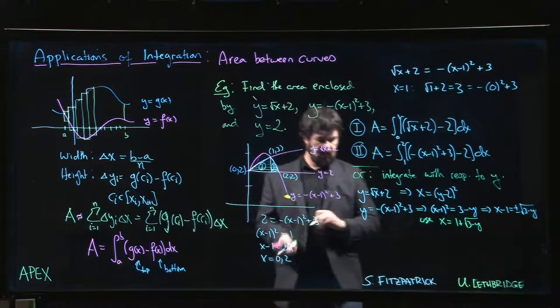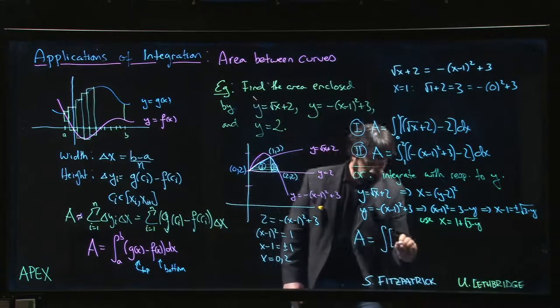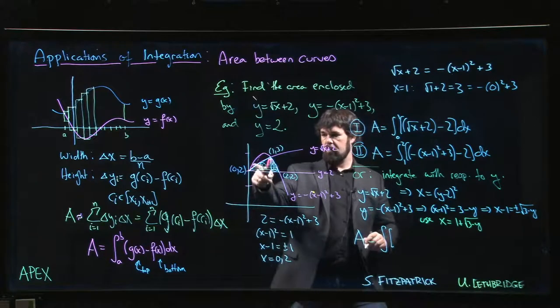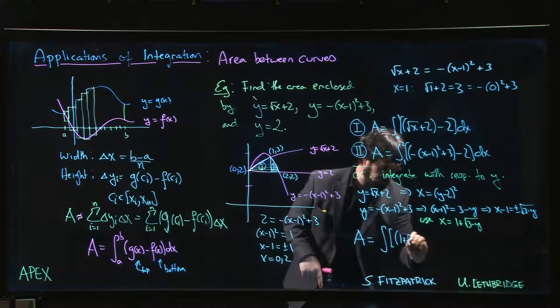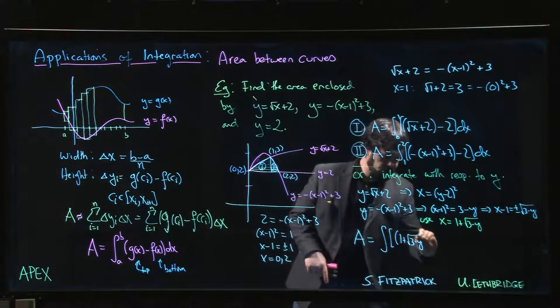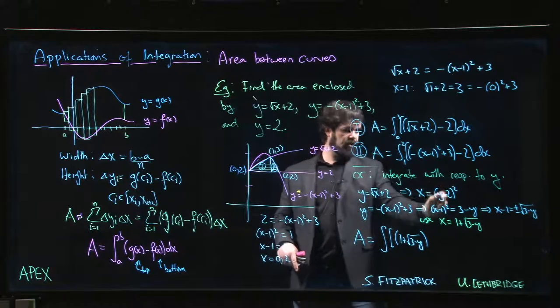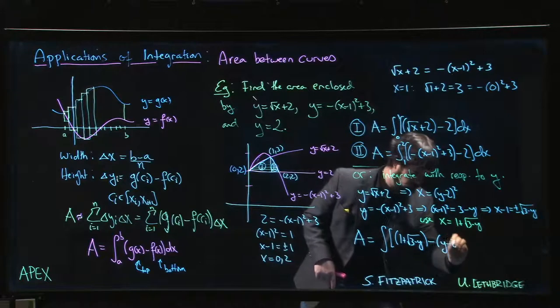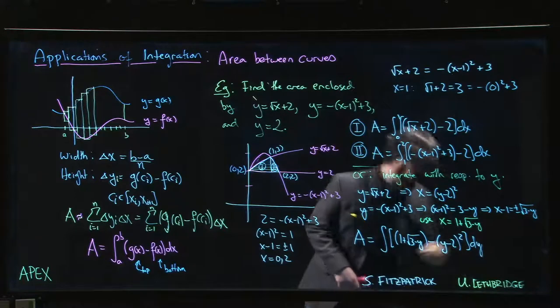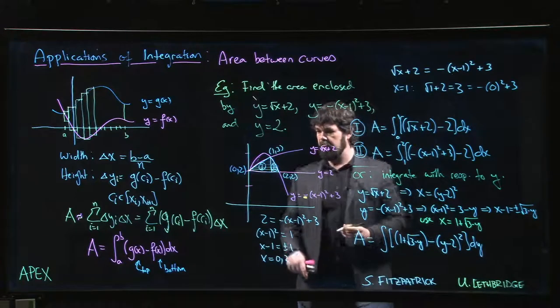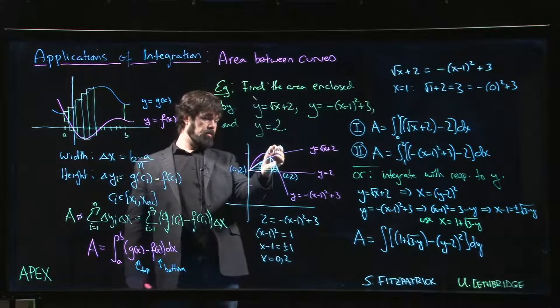And so you can alternatively set things up like this. You can say, well, the area is going to be—so now my upper curve is going to be this one here which is 1 + √(3-y), and then you subtract off the lower curve which is here. Okay, and now you're integrating with respect to y. And what are the limits of integration? Well y starts at 2, goes up to—we have it here—it's 3. So y goes from 2 to 3.